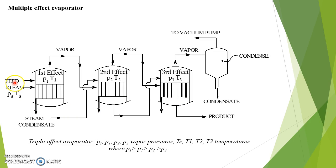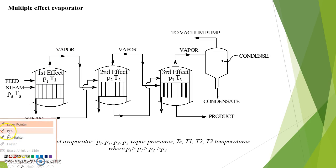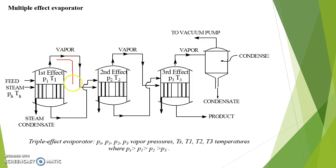Feed is supplied into the first evaporator. Steam is also supplied into the first evaporator. The vapor produced in the first effect evaporator is used as a source of steam in the second effect evaporator. From the second effect evaporator, this vapor is used as a source of steam in the third effect evaporator.